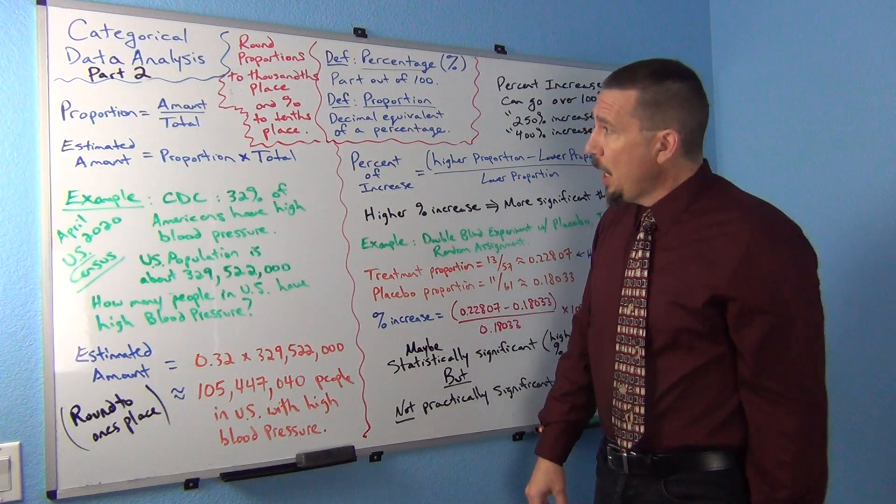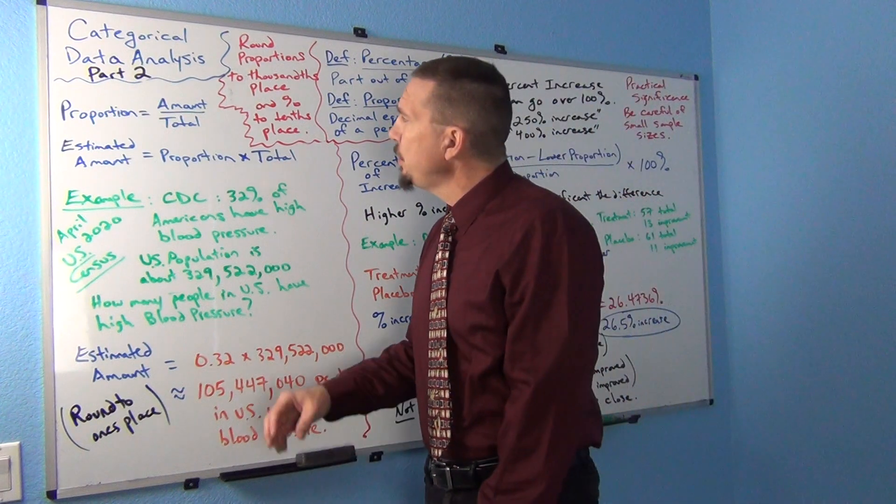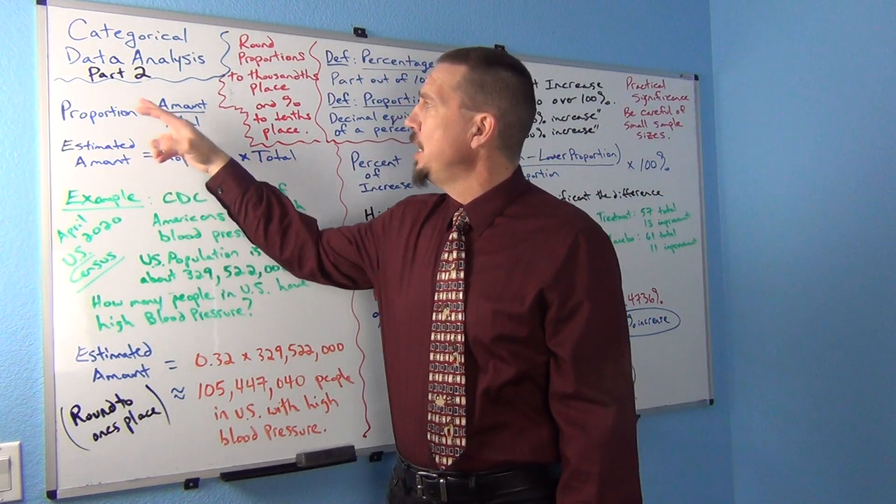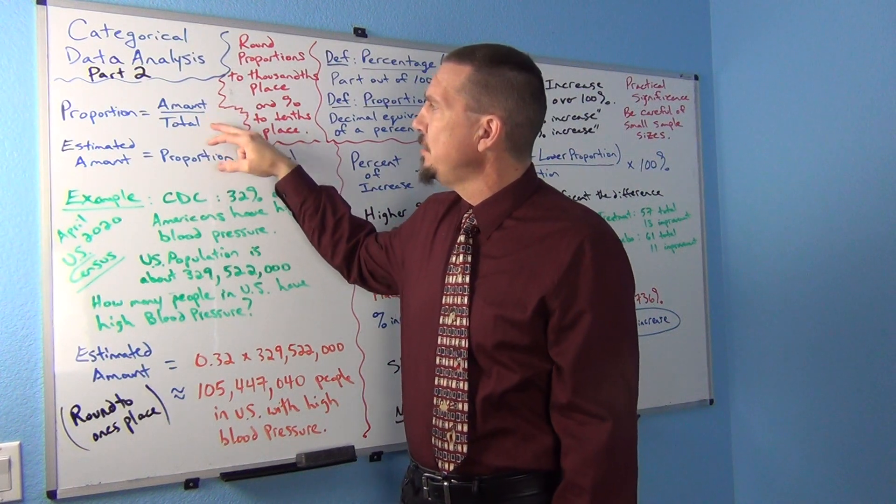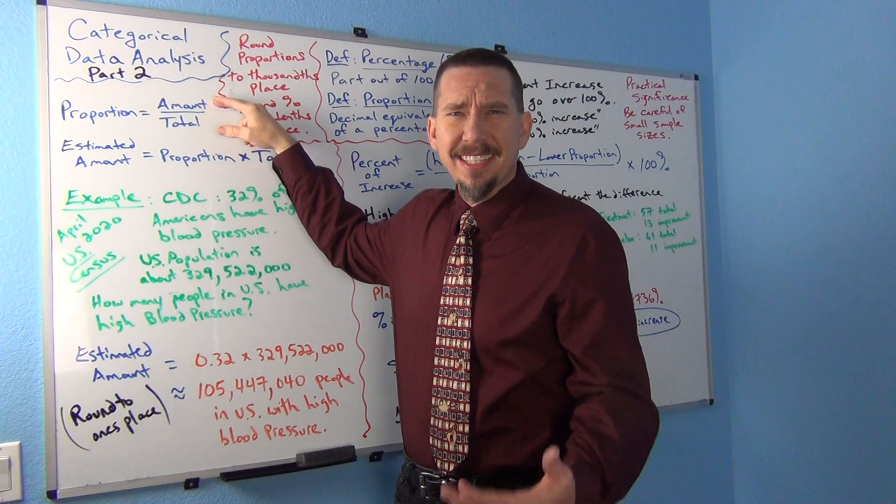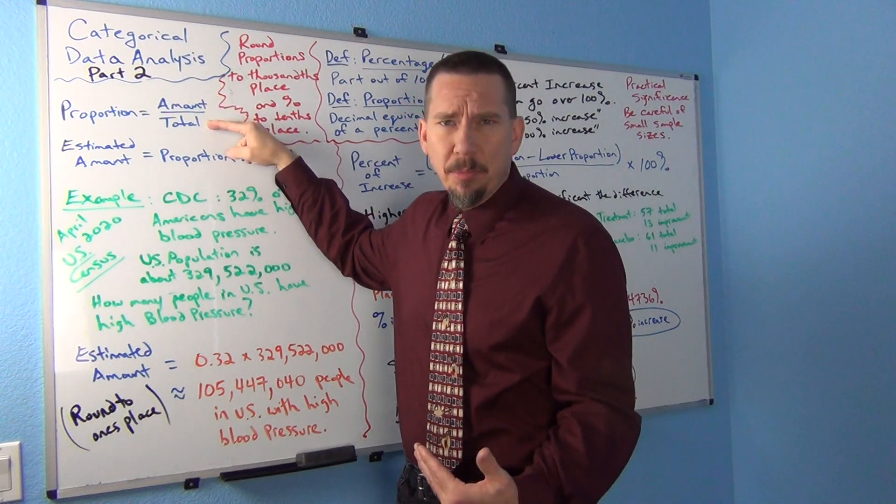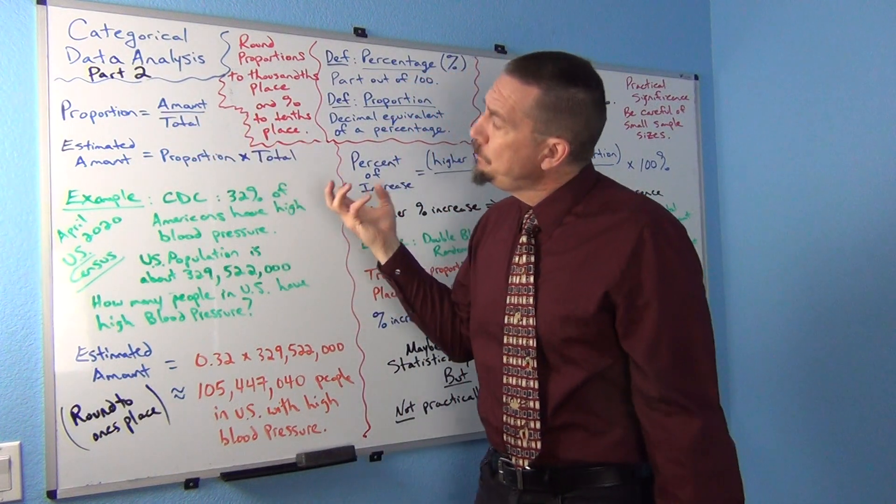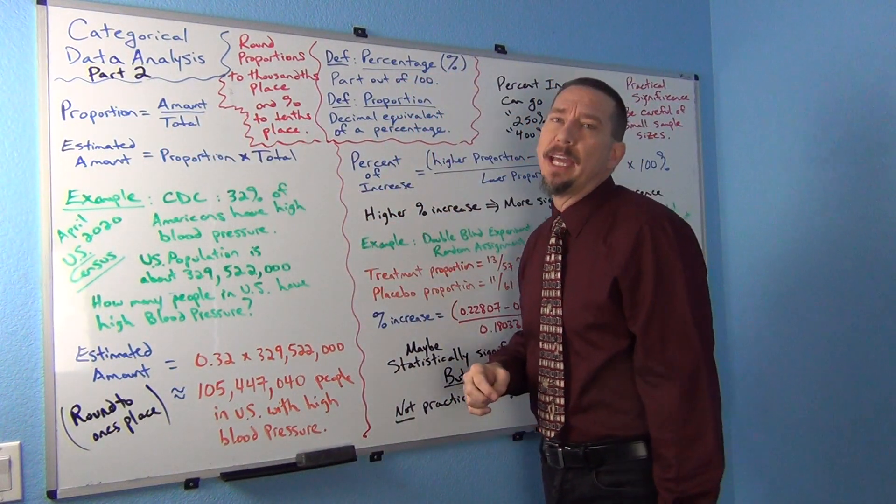So we looked at last time this formula that the proportion is usually an amount out of the total or sometimes you'll see it in stat books as the number of successes out of the sample size. And that's a very common formula for categorical data.